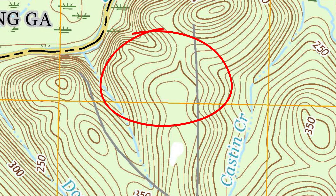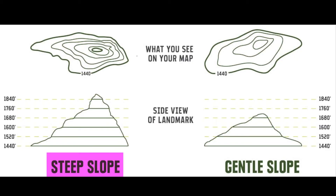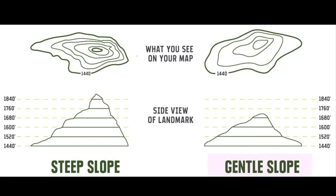We can look at that and use these to figure out how water might move. You've got the combination of the two maps — on the top, you have a very steep slope and you see how those lines are closer together. On the other side, you have a gentler slope — the lines are farther apart, and there are fewer lines on the drawing on the right than the one on the left.